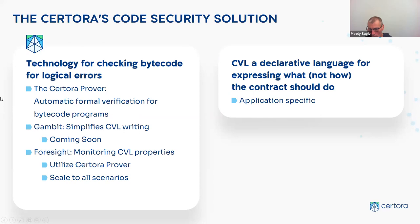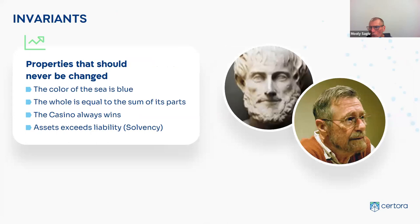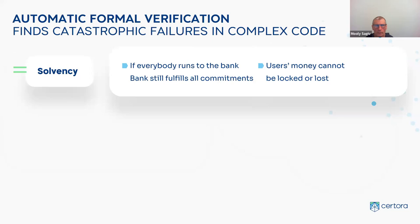Today I will focus on the Certora Prover. I want to show you CVL and how we write specs. One of the most interesting things about formal verification is the idea of invariants — properties that are supposed to hold in your program. For example, in the case of blockchain you have solvency: the assets you hold exceed the liabilities, so you're not bankrupt. These are interesting properties going back to Aristotle and in computer science to Dijkstra. Certora builds technology that automatically finds violations of these properties.